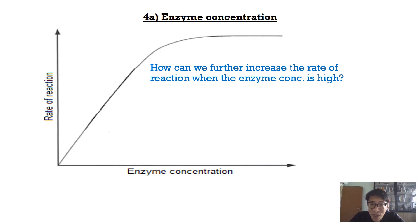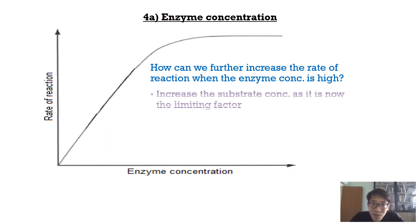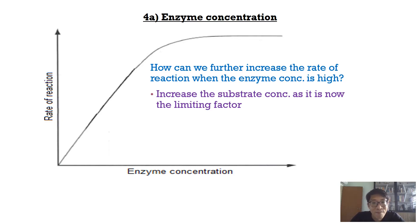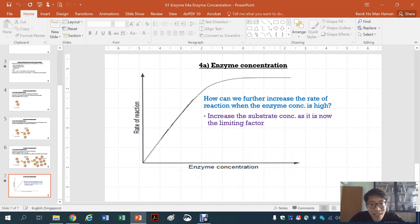Remember, in order to increase the rate of reaction, we must change the value of the limiting factor. The limiting factor when enzyme concentration is high is the substrate concentration. So in order to increase the rate of reaction, we need to increase the substrate concentration. That covers the first factor — enzyme concentration.